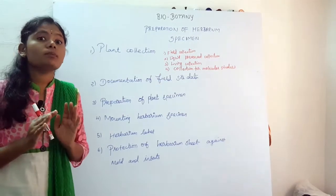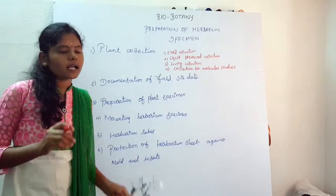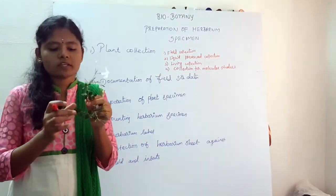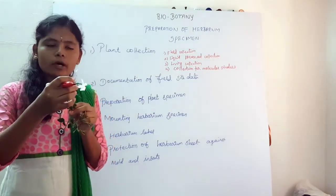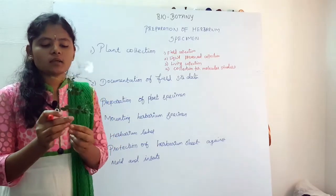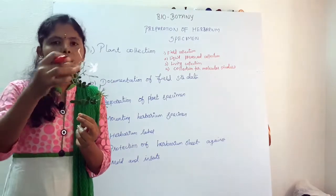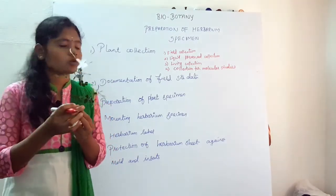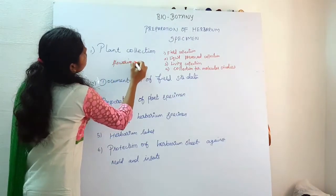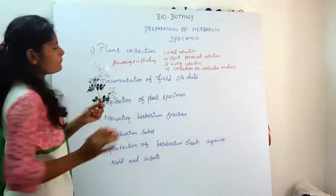In plant collection, when you go to collect, every plant you collect should have flowering — that is the vegetative part or sexual part. When you collect a plant, you should find flowering and then fruit. Collecting flowering or fruiting is compulsory. This is the plant collection step.